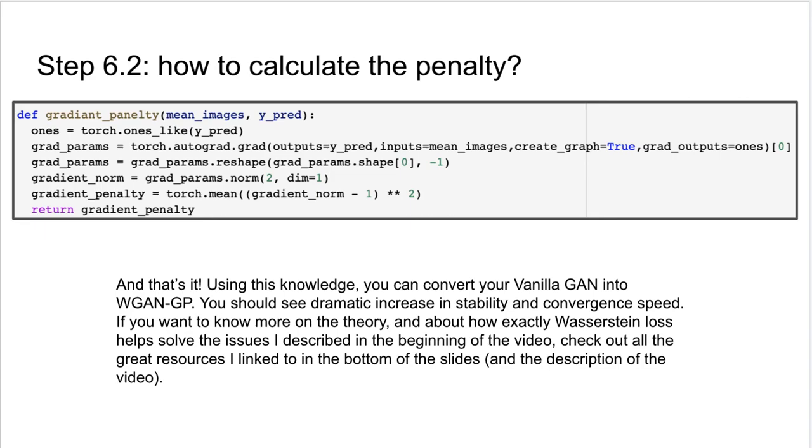And that's it! Using this knowledge, you can convert your vanilla GAN into Wasserstein GANs with gradient penalty. You should see dramatic increase in stability and convergence speed. If you want to know more on the theory and about how exactly Wasserstein loss helps solve the issues I described in the beginning of the video, check out all of the great resources I link to in the description.